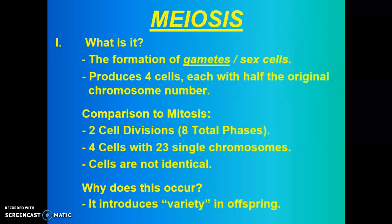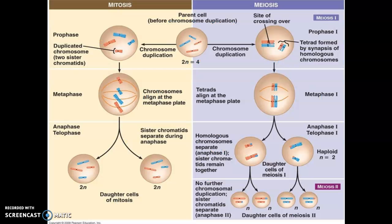Why does this occur? It is introducing variety into offspring. The idea is to ensure the survival of your species — humans, foxes, whatever species we're talking about. If you think about your siblings, unless you have an identical twin, you may share some things that are similar — eye color, skin color — but there are a thousand other things about you and your sibling that are different, and that's because of meiosis.